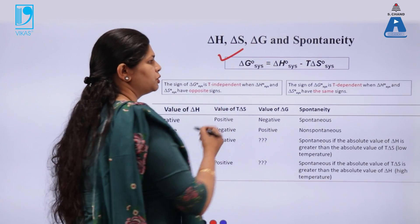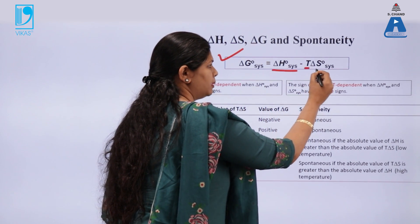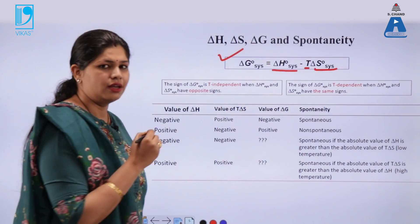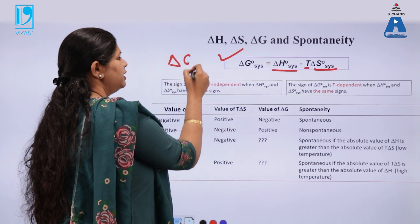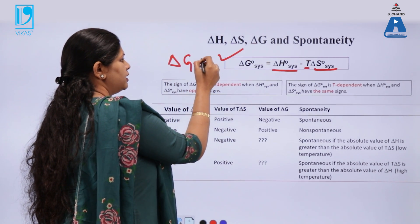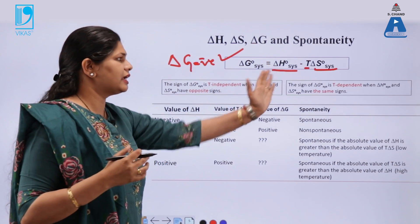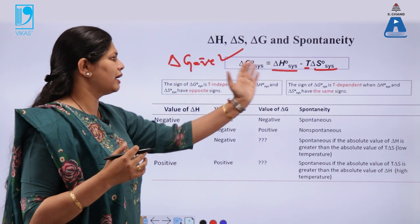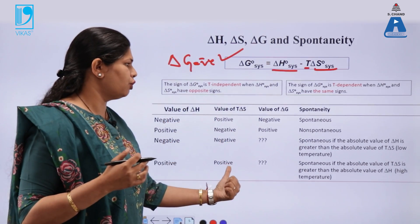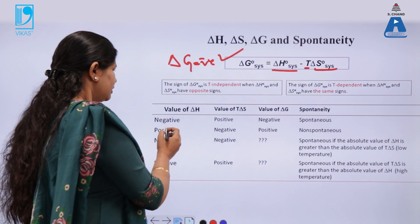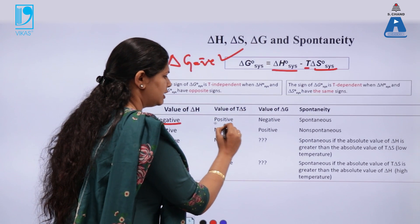This is a fundamental relation between the three factors. You have the enthalpy of the system, temperature, and delta S. For a spontaneous reaction, the change in Gibbs free energy should always be negative — should be less than zero. The parameters on which this depends are the value of delta H and the value of T times delta S. Remember that whenever we have delta H negative and T delta S positive, the reaction will always be spontaneous.